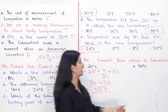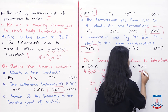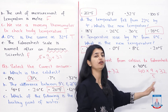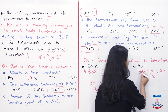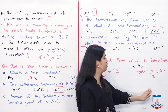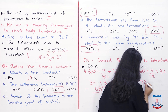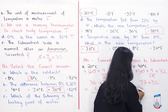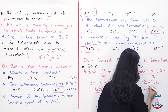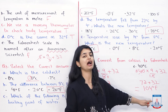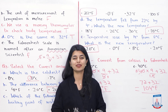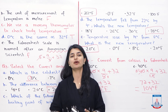For Part B, 40 degrees Celsius: 40 into 9 over 5 plus 32. 40 and 5 cancel to give 8, then 8 into 9 is 72, plus 32 equals 104 degrees Fahrenheit. So the answer for this part is 104 degrees Fahrenheit.